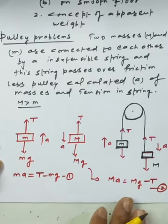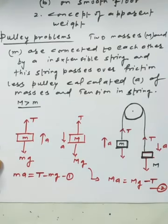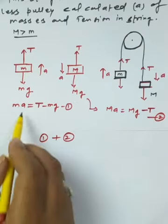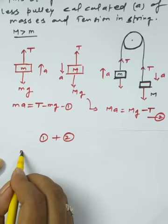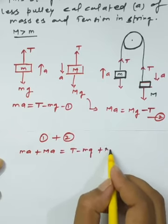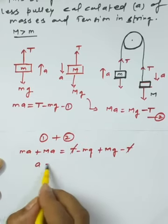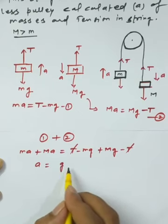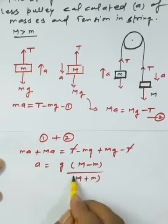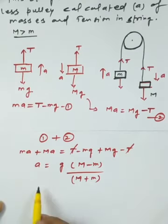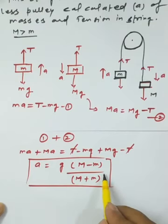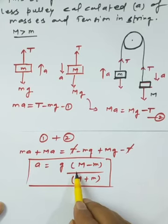Adding equations 1 and 2 to eliminate T: ma + Ma = Mg - mg. Separating a gives the acceleration of the system: a = g(M - m) / (M + m), with units of meters per second squared.